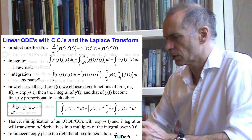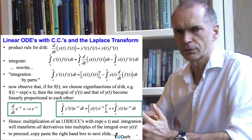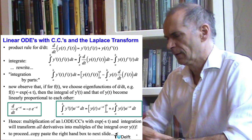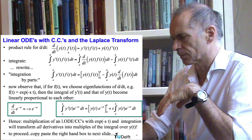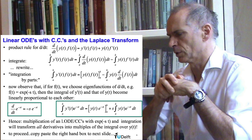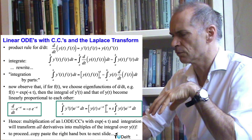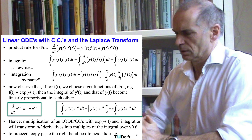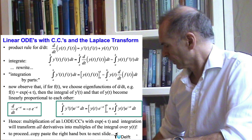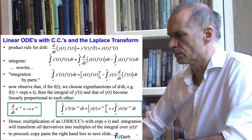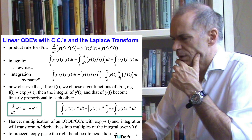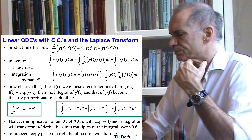Let's first develop the Laplace transform. I start by simply writing the product rule for the derivative with respect to time. F is any function — that could be a forcing function — and y of t is conceived as becoming the solution of a differential equation. I take the derivative of that product by the product rule: we get y′ times f plus y times f′. Then I integrate that expression over a general interval from a to b.